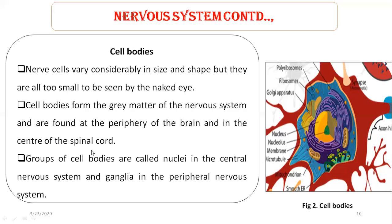Grey matter is the darker pinkish-grey colored tissue of the brain and spinal cord, which consists of nerve cell bodies and branching dendrites. Groups of cell bodies are called nuclei in the central nervous system, and in the peripheral nervous system they are called the ganglia.